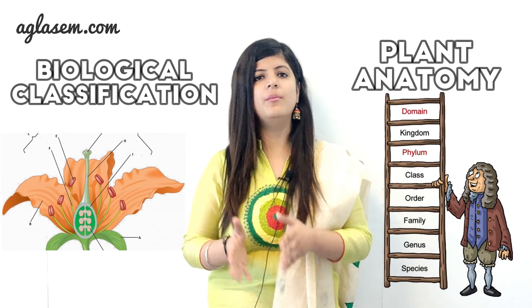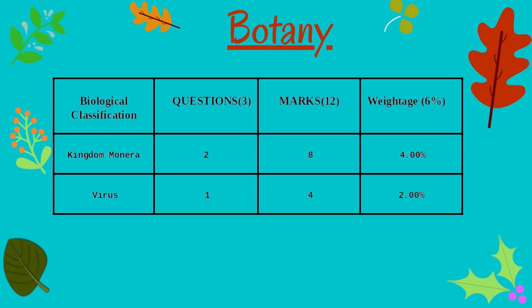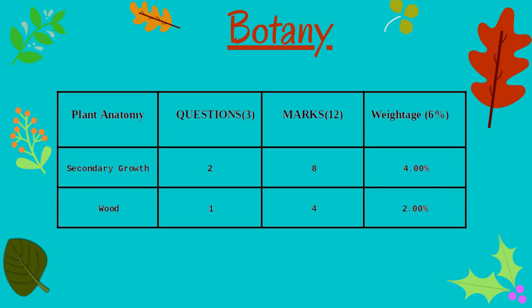Let's discuss the units with 12 marks weightage: Biological Classification and Plant Anatomy. The important topic for Biological Classification is Kingdom Monera, and for Plant Anatomy it is Secondary Growth. Biological Classification has 3 questions and marks weightage of 12, with topics: Kingdom Monera (2 questions, 8 marks) and Virus (1 question, 4 marks). Plant Anatomy also has 3 questions and marks weightage of 12, with topics: Secondary Growth (2 questions, 8 marks) and Wood (1 question, 4 marks).